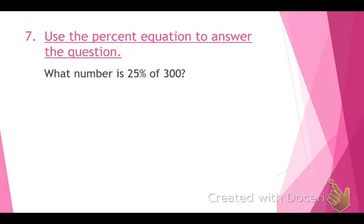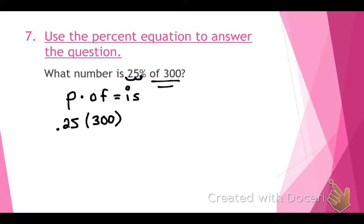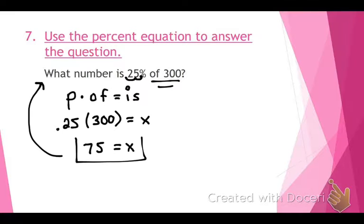Number seven says use the percent equation to answer the question. What is the percent equation? P times of equals is. Now, at the beginning of our notes today, what do we have to do to our percent? Change it to a decimal. So just remember, you've got this decimal point back here, and you move it over. So what do you get? 0.25. Do we know what my of is? Yes. What is it? 300. Always whatever comes after the word of. What is my is? X. When you multiply that out, 75 equals X. Should that be a percent? No. If you look back up here, all it says is what number. So that's the number. The answer is 75.